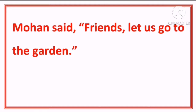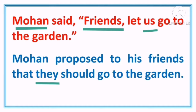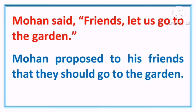यहाँ पर Mohan अपने friends को कह रहा है, तो Mohan propose कर रहा है कि हम चलें। तो यहाँ पर हम क्या change करेंगे? Mohan proposed to his friends that — यहाँ पर Mohan और उसके friends के लिए — they should go to the garden. So: Mohan proposed to his friends that they should go to the garden.